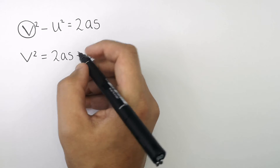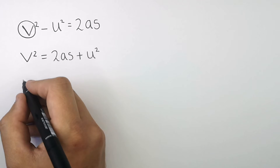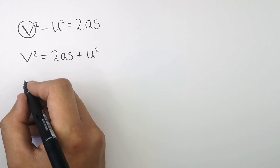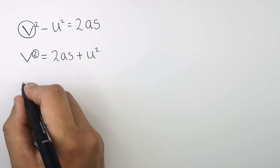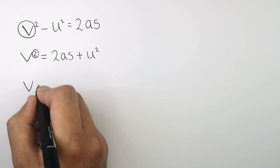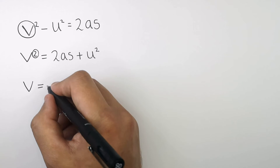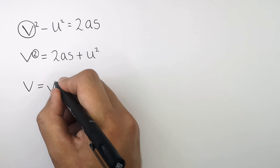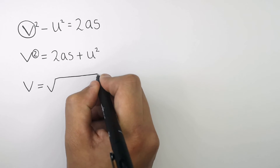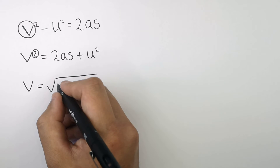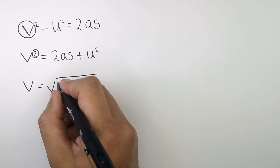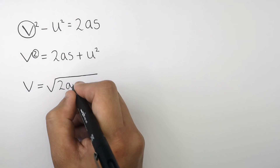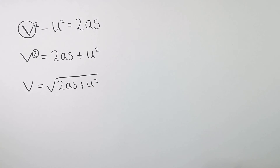This leaves you with V-squared equals 2AS plus U-squared. Now, because you've got V-squared, to make V the subject, you must square root the other side of the formula. So that leaves you with V equals the square root of 2AS plus U-squared.